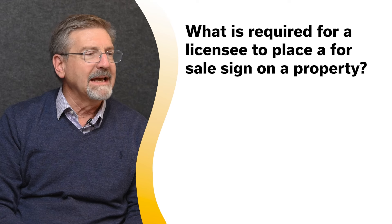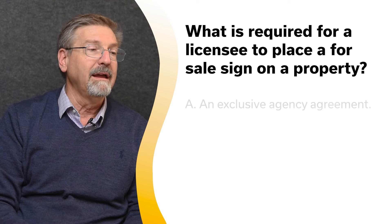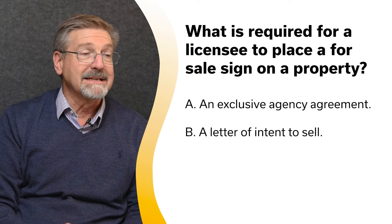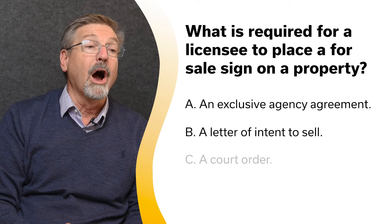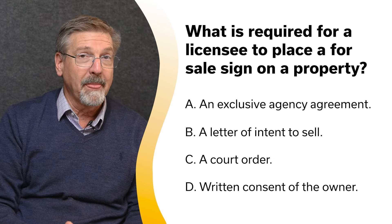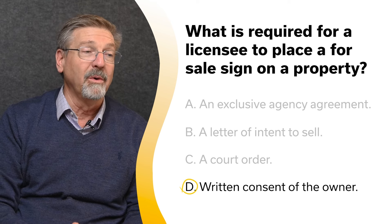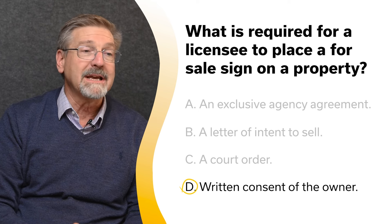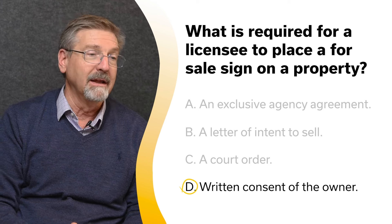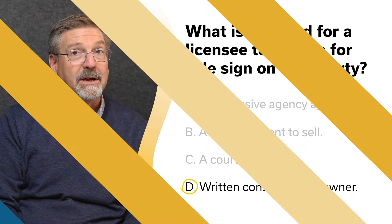What is required for a licensee to place a for-sale sign on a property? A. An exclusive agency agreement. B. A letter of intent to sell. C. A court order. Or D. Written consent of the owner. The correct answer is D — written consent of the owner. Written consent of the owner or owner's agent is required prior to placing a for-sale sign on any property. Don't get tricked into thinking it was A — the exclusive agency agreement.